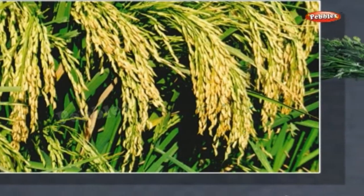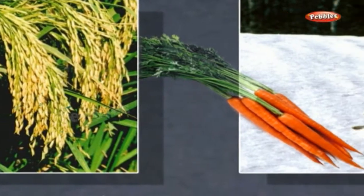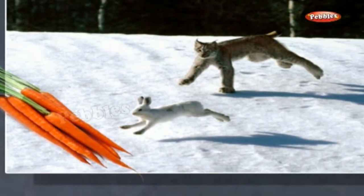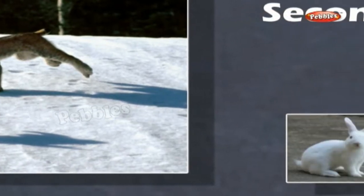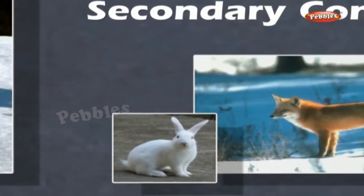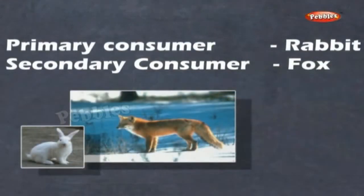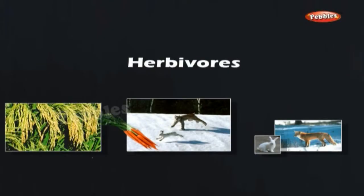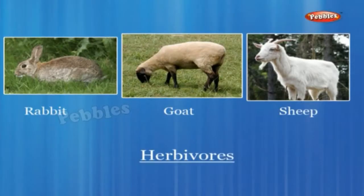Consumers depend directly or indirectly on the producers for food. They are mostly animals and are also called heterotrophs. Depending on the food they eat, consumers are put into various categories. Herbivores are organisms that obtain their food by directly feeding on plants, e.g. rabbit, goat, sheep etc.